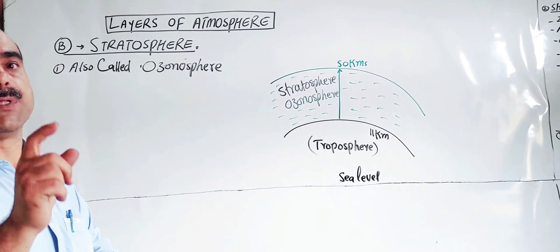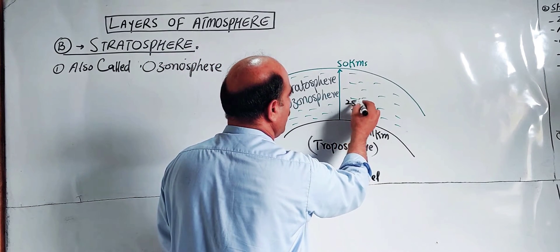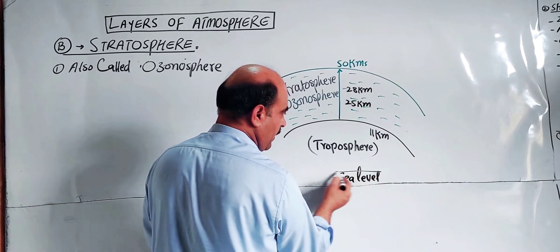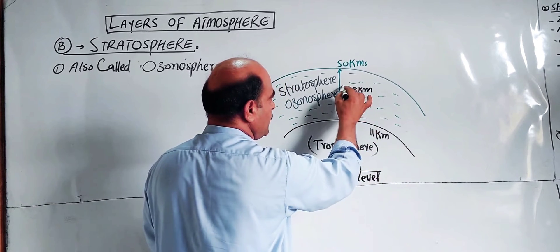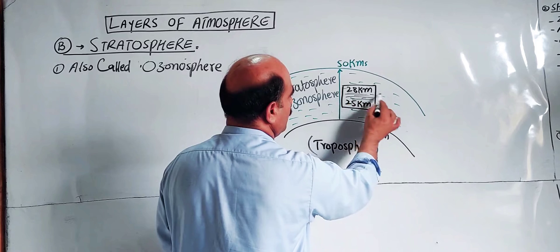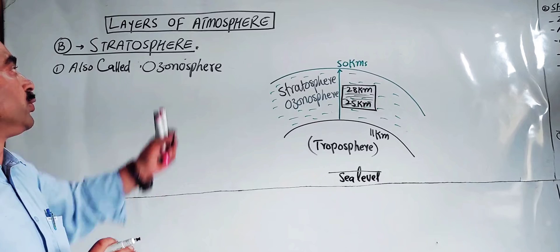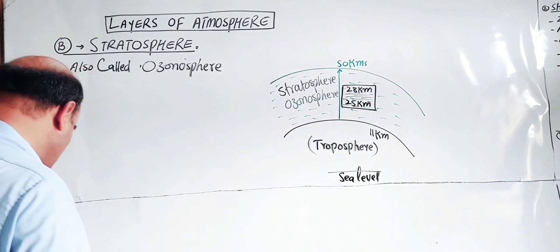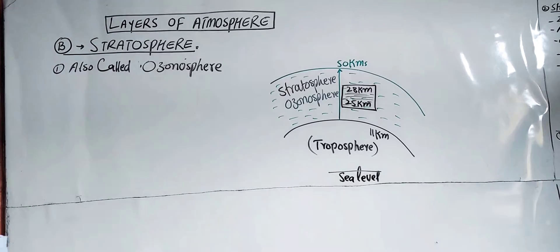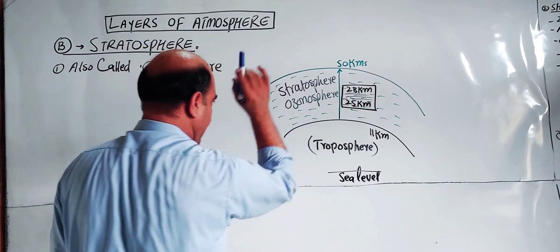The ozone is concentrated at around 25 km height from the sea level. The sea level area from 25 to 28 km — in this area, the ozone is present, forming the region or layer called the ozonosphere, because of the presence of ozone. That topic, the detail is the same as the ozone, its range and position in the atmosphere. This is the stratosphere characteristic.